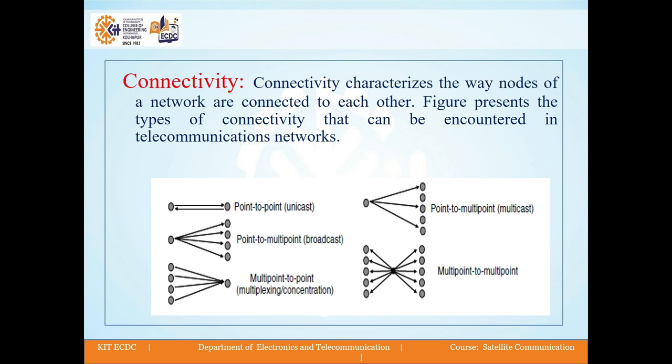Connectivity characterizes the way nodes of a network are connected to each other. The following figure represents the types of connectivity that can be encountered in telecommunication networks. We can see point-to-point connectivity, which is also called unicast; point-to-multipoint connectivity, which is multicast; and point-to-multipoint broadcast.